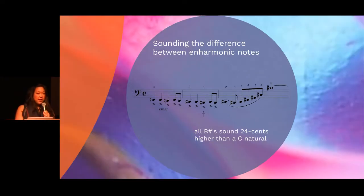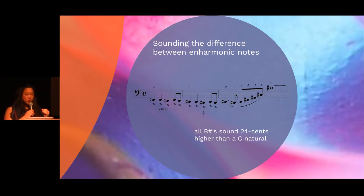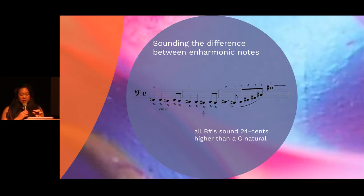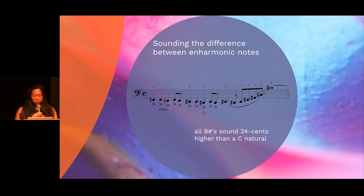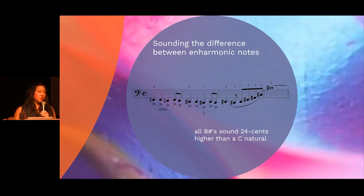Going back to an audio example, we showcase a B sharp where the arrow is. The 24-cent difference is crucial to Pythagorean enharmonic notes because it is the exact pitch difference between each enharmonic note. In this sample, that B sharp needs to be placed 24 cents higher than the open C for the cello. You cannot really play an open C there because you will sound very flat.